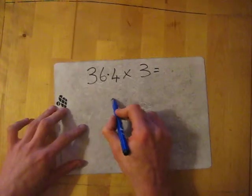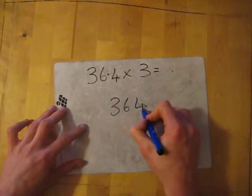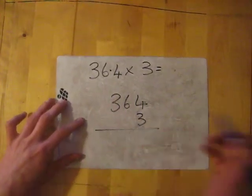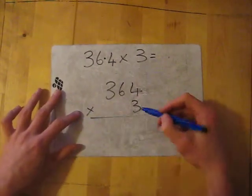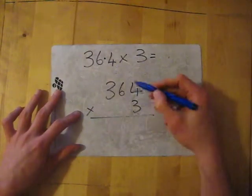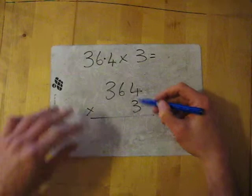So we've got 36.4 times 3. Forget about that decimal, so I'm just going to do 364 times 3. Simple, we know how to do this. Life 1 kills everything above it: 3 times 4 is 12, carry the 1. 3 times 6 is 18, add the 1, that's 19.